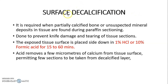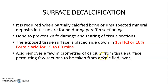Surface decalcification is required when partially calcified bone or unsuspected mineral deposits in tissue are found during paraffin sectioning. It is done to prevent knife damage and tearing of the tissue section. The exposed tissue surface is placed face-down in 1% HCl or 10% formic acid for 15–60 minutes. The acid removes a few micrometers of calcium from the tissue surface, permitting a few sections to be taken from the decalcified layer.